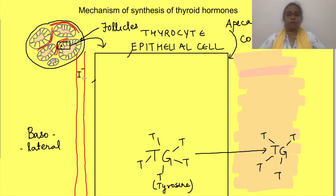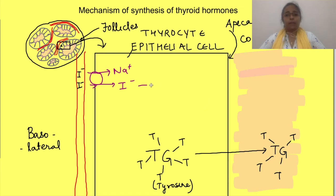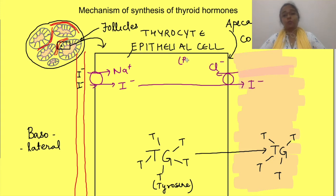The next step involves trapping and transport of iodide. Iodine is present in circulation as iodide ion. This iodide is taken up into the cytoplasm by the sodium-iodide symporter, which is a secondary active transporter present on the basolateral membrane of thyrocytes. This iodide then enters into the colloid via the apical membrane through the chloride-iodide exchanger, also known as pendrin. So now we have both iodide and thyroglobulin in the colloid.